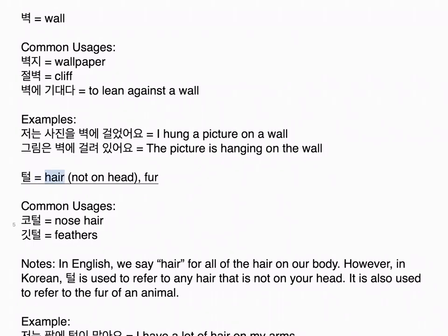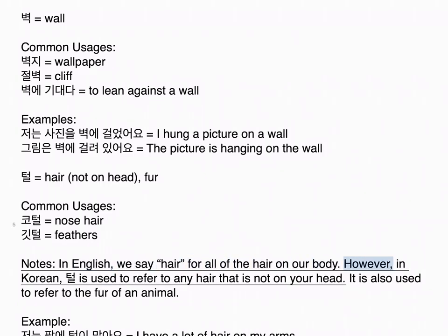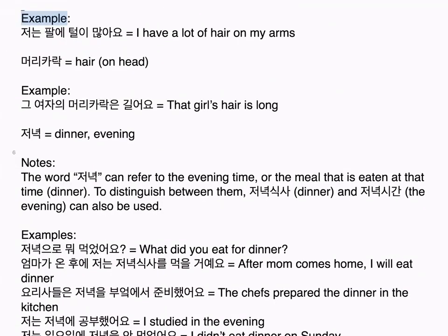털 means hair not on head, or fur. Common usages: 코털 means nose hair, 깃털 means feathers. Notes: In English we say 'hair' for all of the hair on our body. However, in Korean, 털 is used to refer to any hair that is not on your head. It is also used to refer to the fur of an animal. Example: 저는 팔에 털이 많아요. I have a lot of hair on my arms.